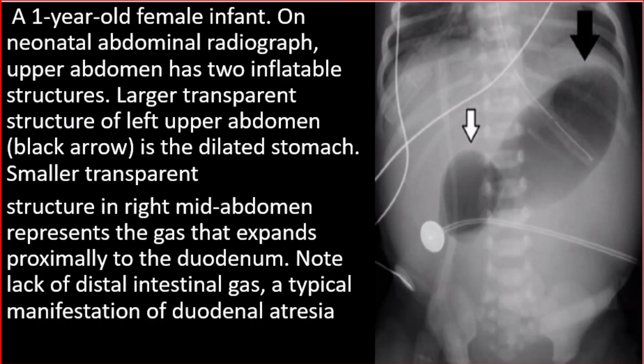This picture shows a one-year-old female infant on neonatal abdominal radiograph. The upper abdomen has two inflatable structures. The larger transparent structure of the left upper abdomen (black arrow) is the dilated stomach. The smaller transparent structure in the right mid-abdomen represents gas expanding approximately to the duodenum. Note the lack of distal intestinal gas, a typical manifestation of duodenal atresia.